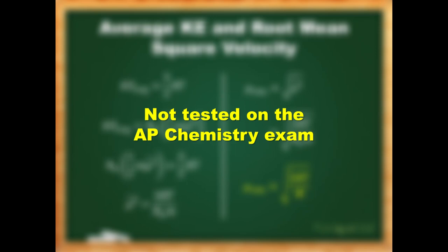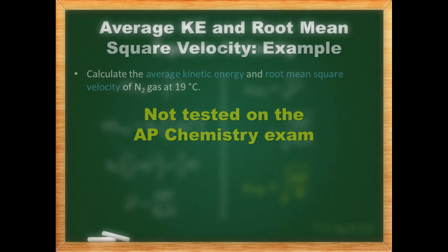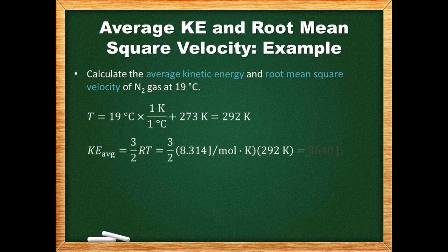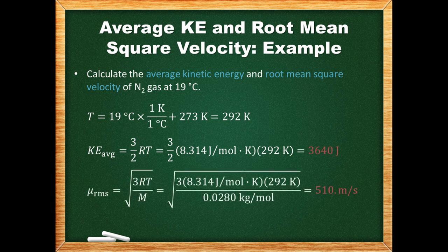Just to check that we know how to apply these equations, let's do a quick example. First, convert the temperature to Kelvin — it's then straightforward to determine the average kinetic energy. The molar mass of nitrogen is 28 grams per mole; we divide by 1000 to get this in kilograms per mole. We'd expect velocity around room temperature to be in the range of 200 to 2000 meters per second, so our value seems reasonable. If we forgot to convert the molar mass to kilograms, we would have gotten a value around 60 meters per second.